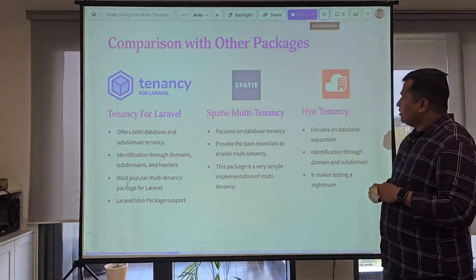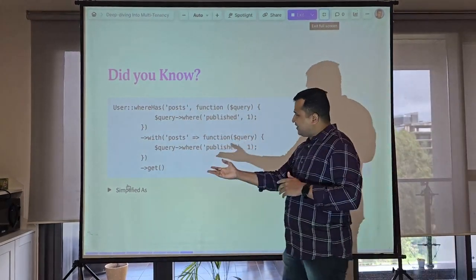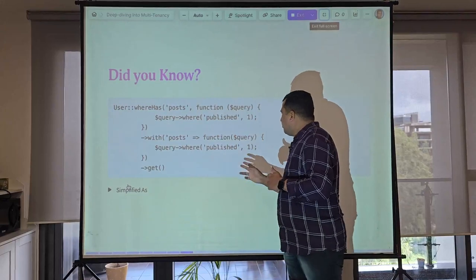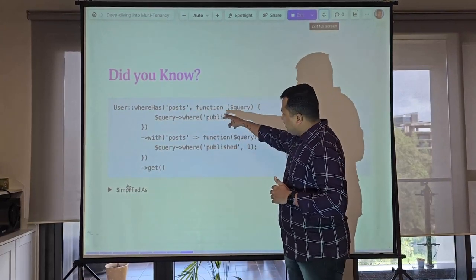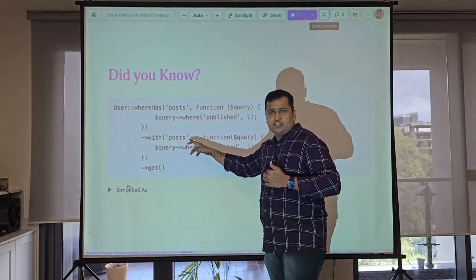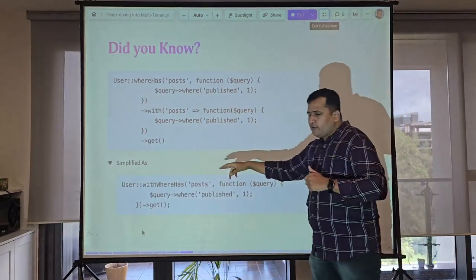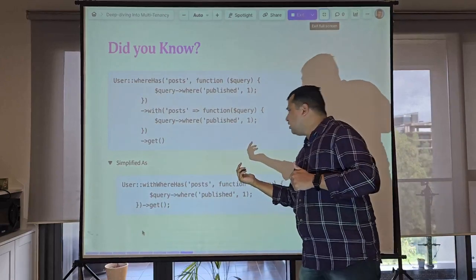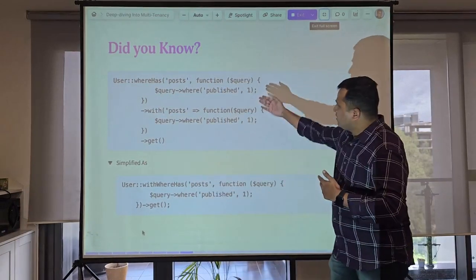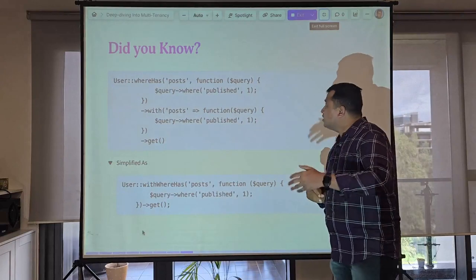Another Laravel tip: when I started writing Laravel I used to write whereHas separately and then eager load the relationship with with(), requiring the condition written twice. This can be simplified with withWhereHas, introduced in Laravel 9. Previously, if you needed a query with a relationship condition, you'd write it in two separate sections — whereHas and with. Now it's possible using withWhereHas in a single statement.